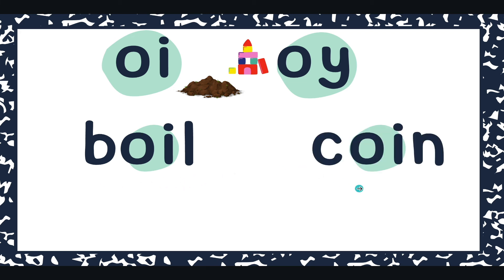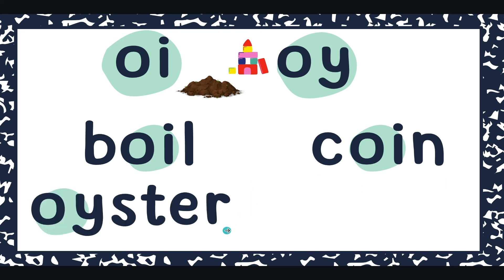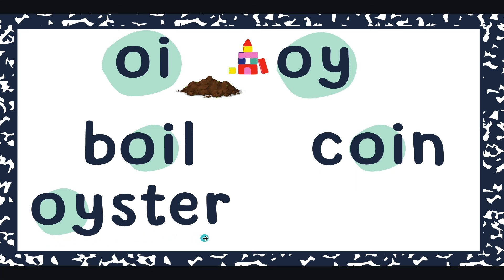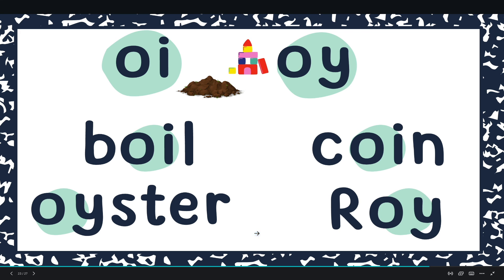So what's this word? B-o-i-l, boil. Yes! C-o-i-n, coin. Perfection. This one has the OY in the beginning — do you think that's going to change the sound? Nope, still going to say "oi." So it says oi-st-r — oyster! Yeah. And what about this one? R-oy — yeah, that's somebody's name.